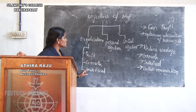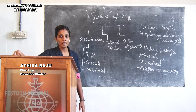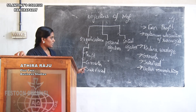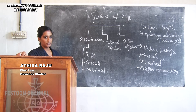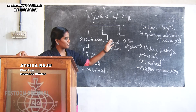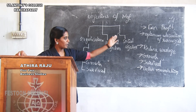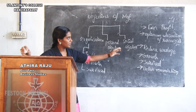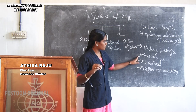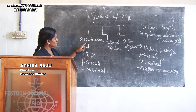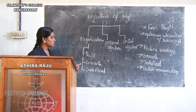These three objectives are organizational objectives. We call them profit, growth, and survival — also optimal utilization and reduce wastage. The objectives are the management objectives and organization objectives.